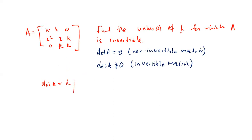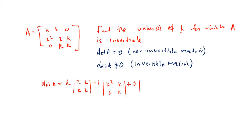When I focus on that element k, I eliminate its row and column, leaving the 2×2 submatrix: 2k, k / 0, k. Then moving to the next entry k, I eliminate its row and column, leaving: k², 0 / 0, k. The last entry is 0, leaving submatrix k², 2k / 0, k.